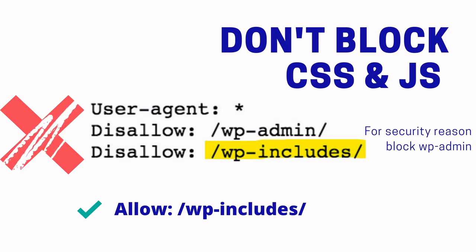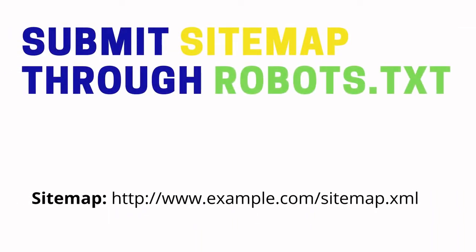If you disallow robots from crawling your CSS and JavaScript files, Google won't know whether your website is mobile-friendly or not. If you load content using JavaScript, Google won't be able to index that content. So make sure you allow your CSS and JavaScript files. For security purposes, you can disallow login pages such as admin or wp-admin folders.